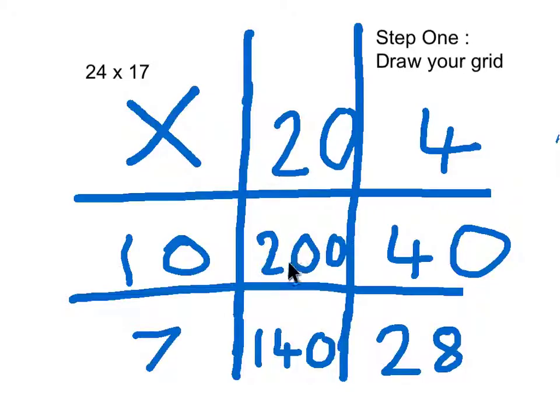So 10 times 20 equals 200, 10 times 4 equals 40, 7 times 20 equals 140, and 7 times 4 equals 28.